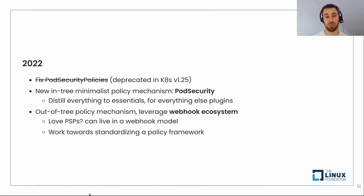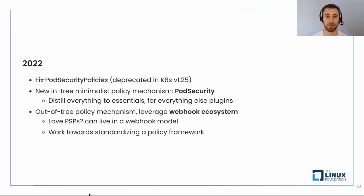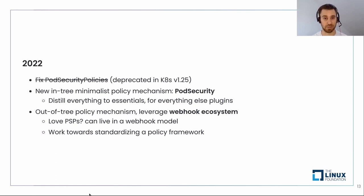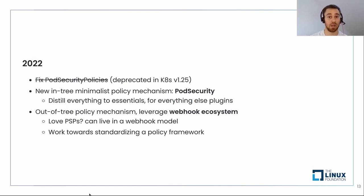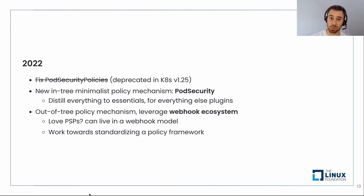So what are the alternatives? We have two. The second option is another in-tree policy mechanism called pod security — more minimalist with fewer moving parts than PSPs, and composable with the third approach. If pod security is not enough, you can go with the third approach: an out-of-tree policy mechanism. Normally the admission controller comes inside the cluster, but you can run your own outside the Kubernetes installation. That's the third approach, using the webhook ecosystem to work toward standardizing on a policy framework using a policy engine. My colleague Raul will explain that later.